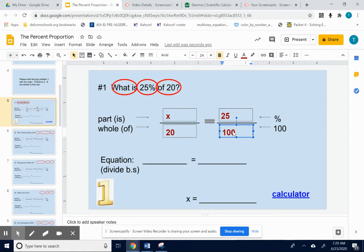Now use your butterfly trick. Because you have a proportion. We know that this times this equals this times this.